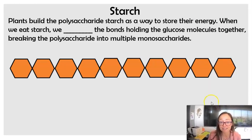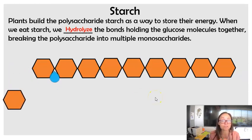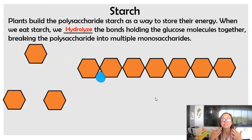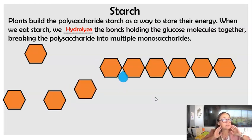particularly for us as animals, is because when plants build this polysaccharides of starch using alpha-glucose monomers to store their energy, lucky for us, when we eat this starch, we are able to hydrolyze those bonds holding the alpha-glucose monomers together. So when we eat like french fries or rice or some other starch,